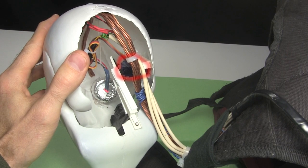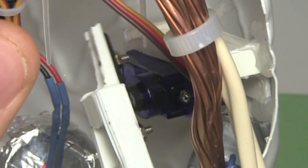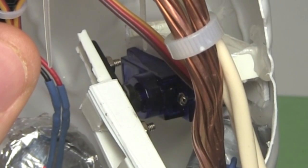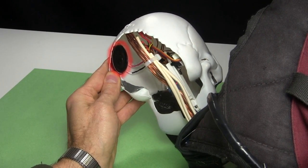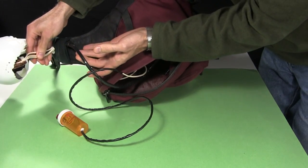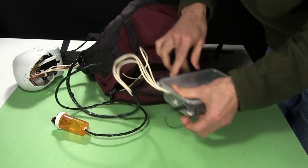The mouth is open and closed by this small servo. And the sound comes from this small speaker here. The wires from all those parts go to these cables, which go to this box inside the backpack.